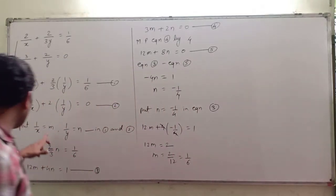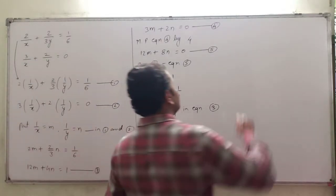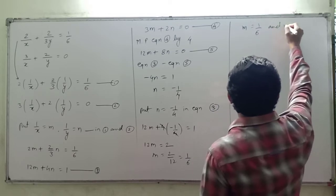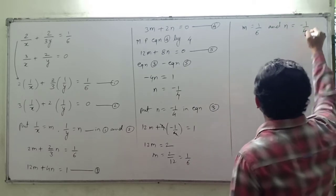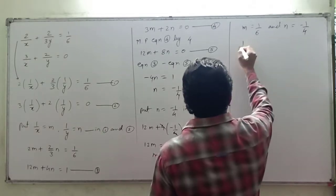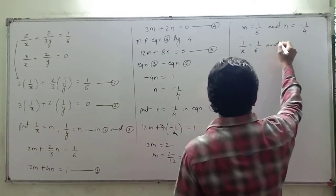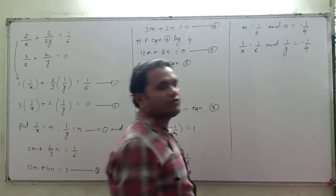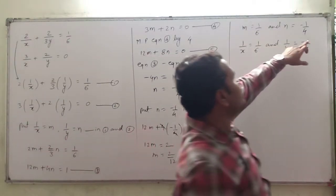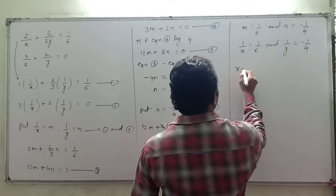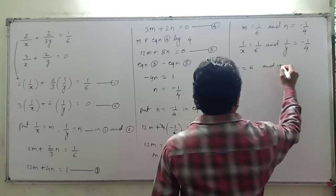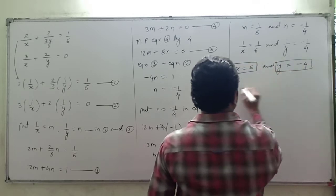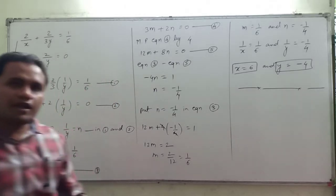Now we will re-substitute the values. We have m = 1/6 and n = -1/4. Our m is 1/x = 1/6 and our n is 1/y = -1/4. Since the numerators are 1, taking the reciprocal we get x = 6 and y = -4. In this way the question ends. Write down that question.